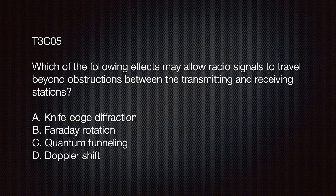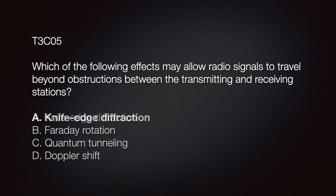The question reads: which of the following effects may allow a radio signal to travel beyond obstructions between the transmitting and receiving stations? A) knife-edge diffraction; B) Faraday rotation; C) quantum tunneling; or D) Doppler shift. The correct answer is A — knife-edge diffraction.